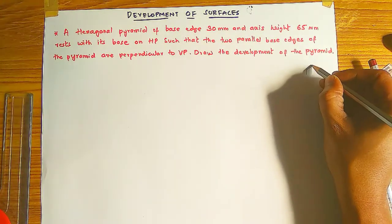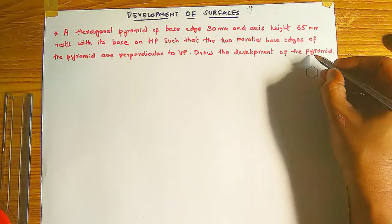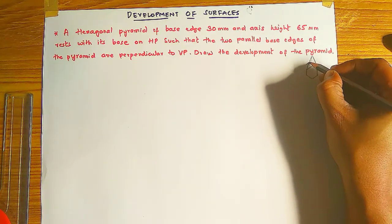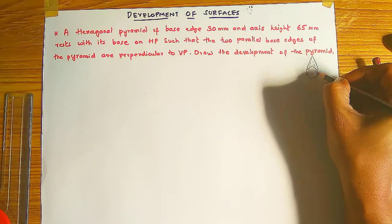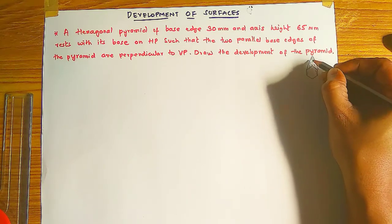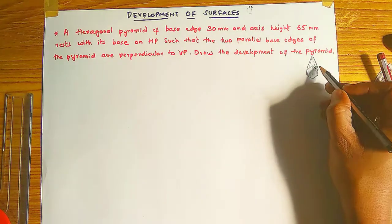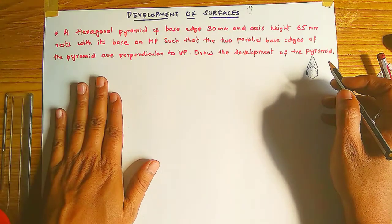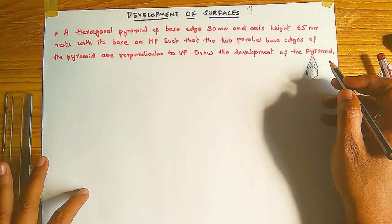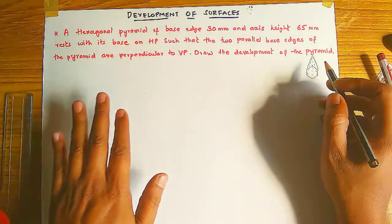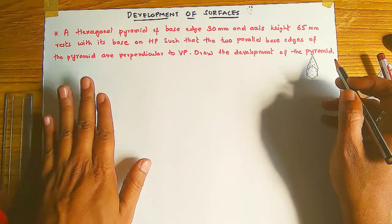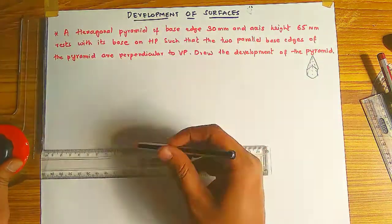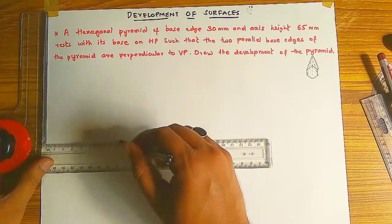The hexagonal pyramid has a hexagon with 6 sides and a pyramid shape on top. First we have to draw the orthographic view — that means the front view and top view as given in the question. To draw this, first we draw an XY line.